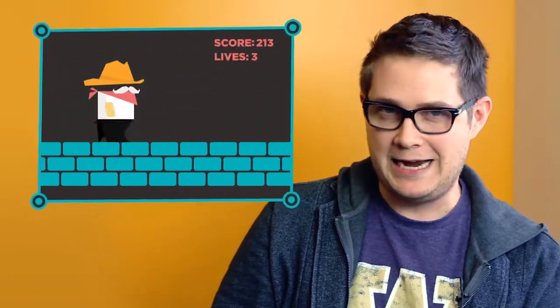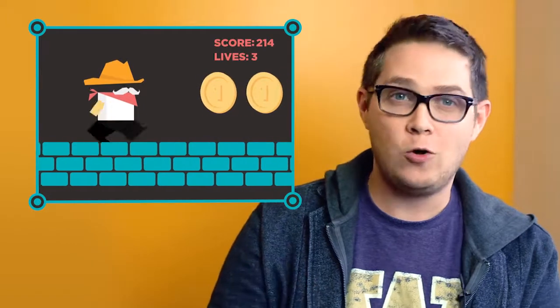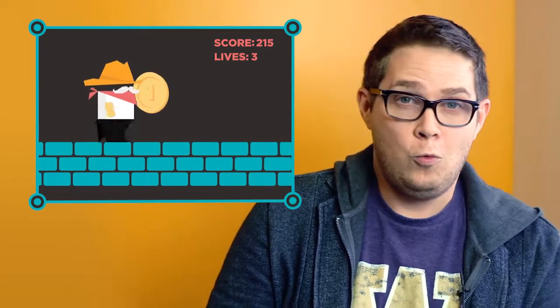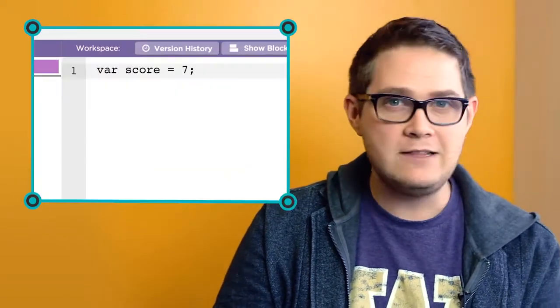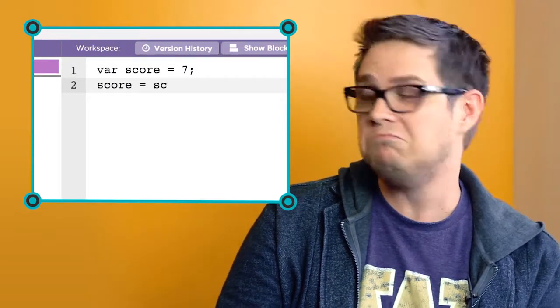What if we want to create a game where we increase the user's current score by one point every time a coin is acquired? We could do this by updating the value stored inside the variable score based on its current value, like this.